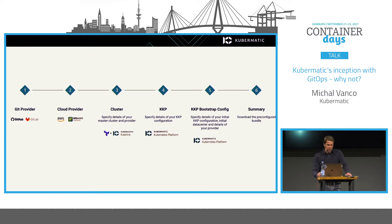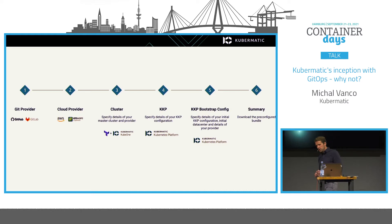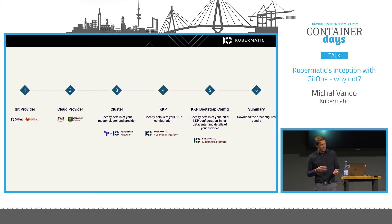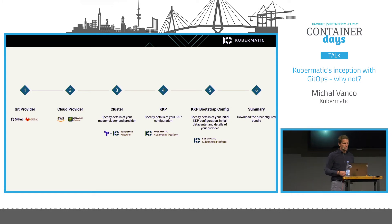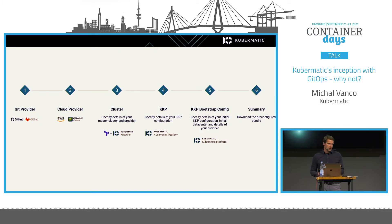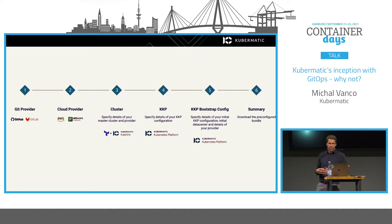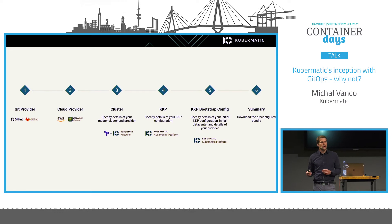In the next step we use the Kubermatic installer, the official tool and operator for installing the Kubernetes platform. There are configuration options: you can choose the version, provide the DNS endpoint where the dashboard will be available, and decide whether you want to install monitoring, logging, and alerting stack on top of your KKP.